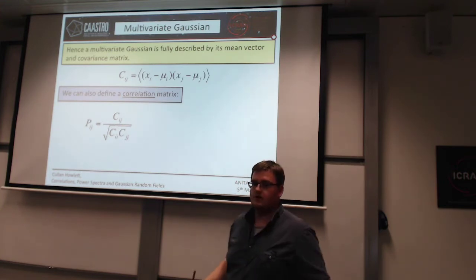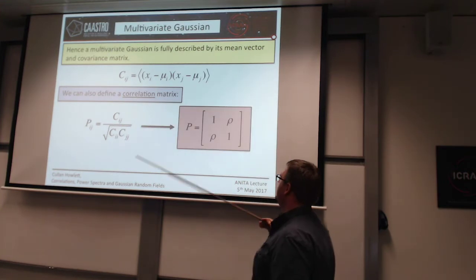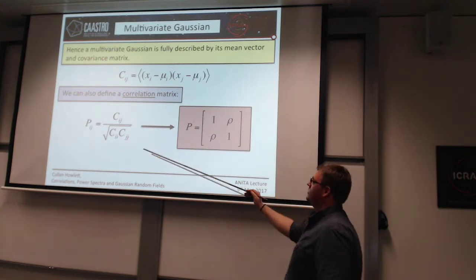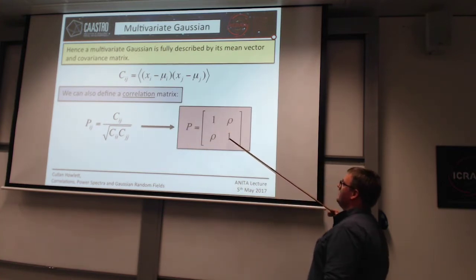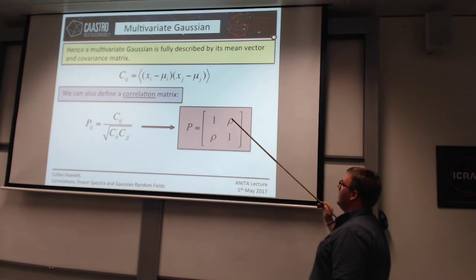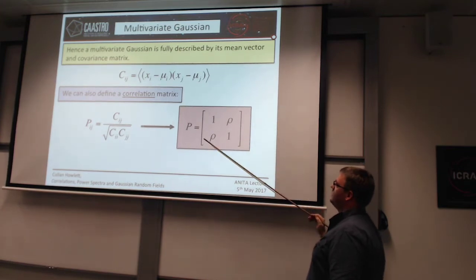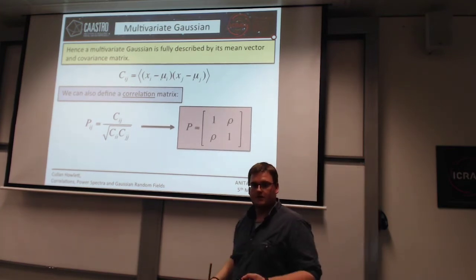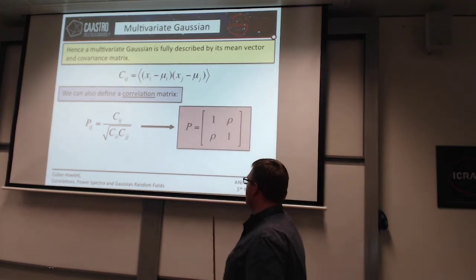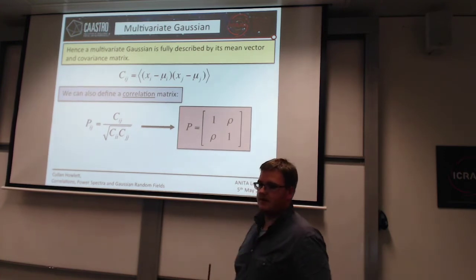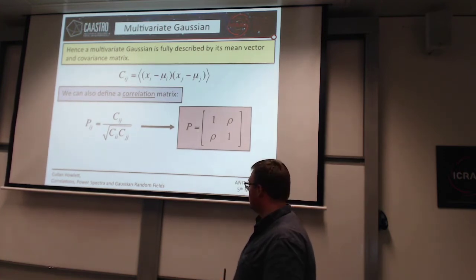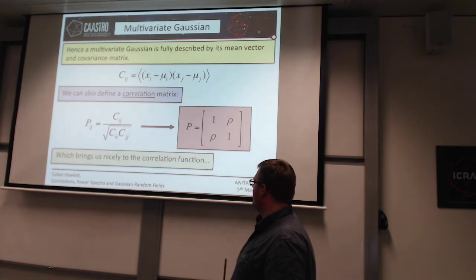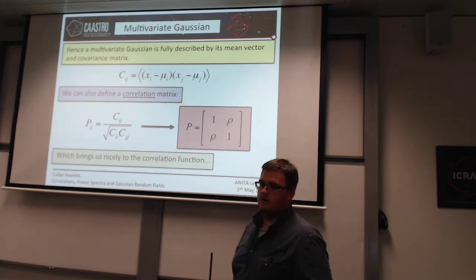For that two-dimensional case, once you've normalized out the sigma_x squared and sigma_y squared terms, all you're left with is just the correlation coefficient between the two. Hopefully you've all done some of this before, in undergraduate or Masters courses. And this brings us nicely to the idea of a correlation function.